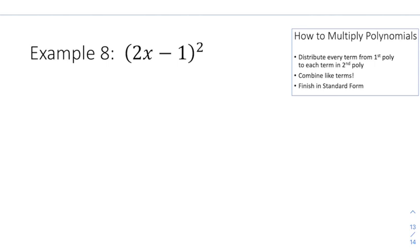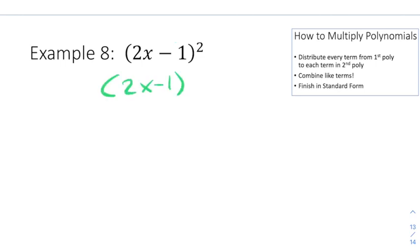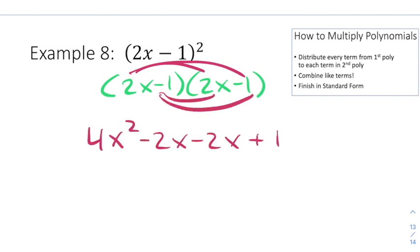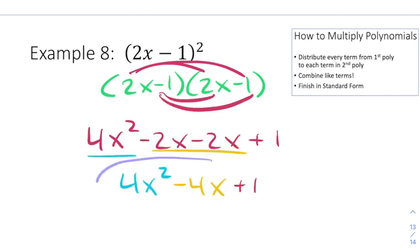The last one is a little tricky in the setup. Remember, anything squared means multiply it by itself — do not distribute that 2 in. That's a big mistake people make. Instead, write the polynomial twice: 2x minus 1 times 2x minus 1. This allows us to do our distribution, and once we've distributed and combined like terms, we have our final answer.